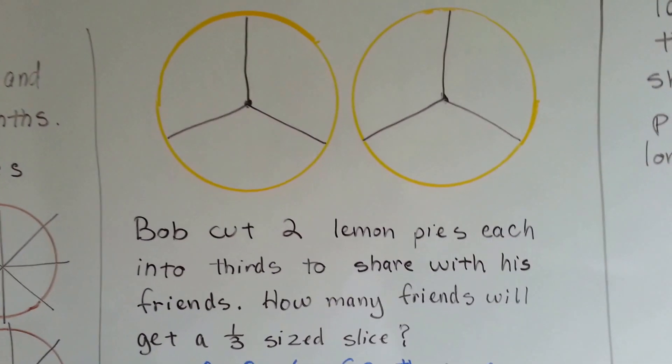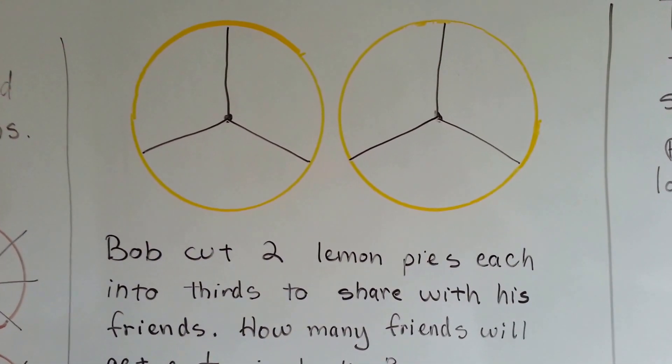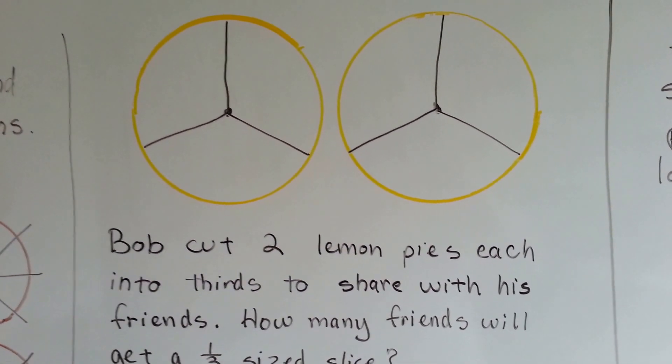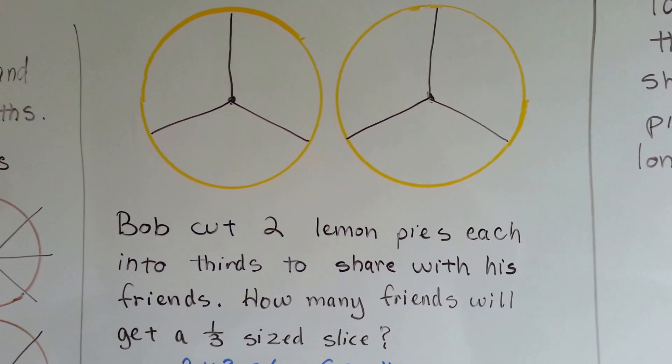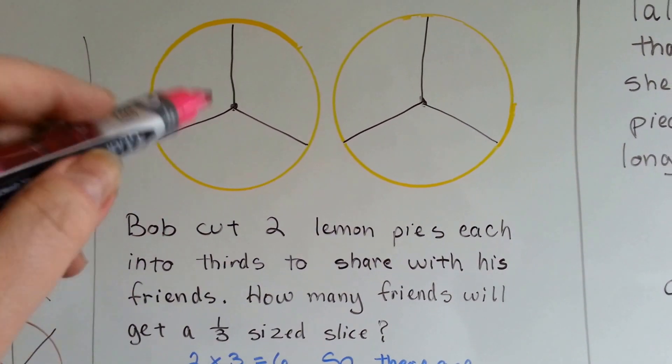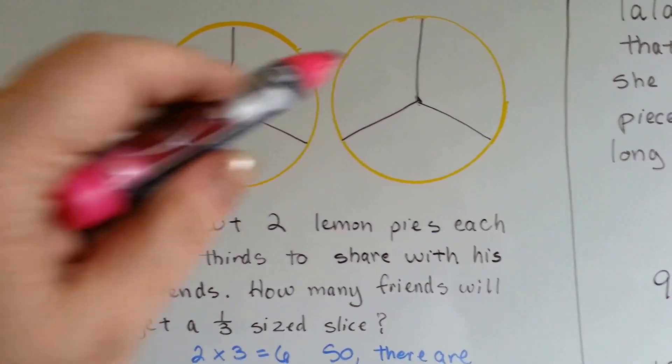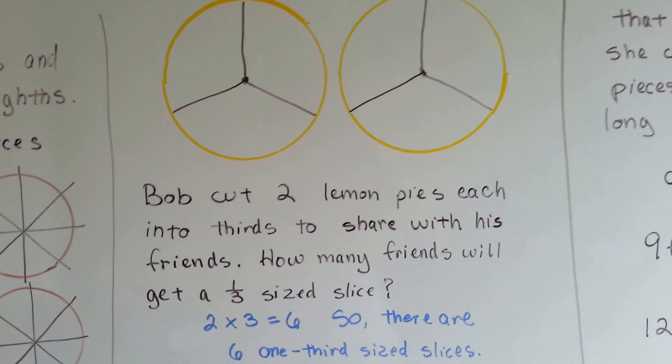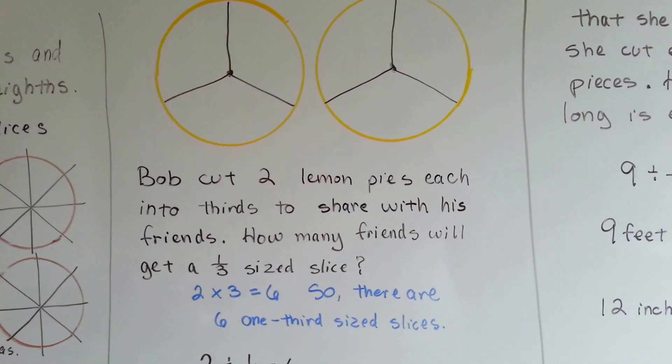Now Bob cut two lemon pies each into thirds to share with his friends. Bob's not getting any. These are just for his friends. How many friends will get a one third sliced piece of the lemon pie? It's very easy to see that there's six pieces. So six friends will get a piece of pie. Big piece of pie.